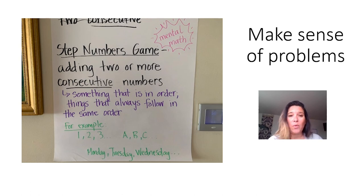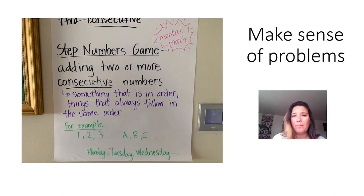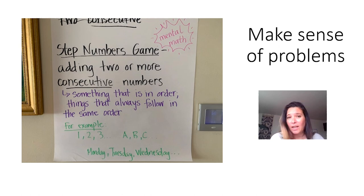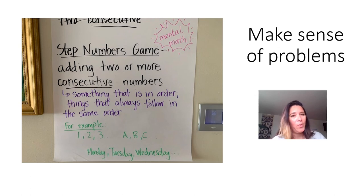Consecutive just means something that is in order, or things that always follow in the same order. For example, the numbers 1, 2, 3, 4 are in consecutive order because 3 always comes before 4. Another example is the ABCs — E always comes after D and before F. And the days of the week — Monday, Tuesday, Wednesday — those always happen in a consecutive order. I think you understand what consecutive means!